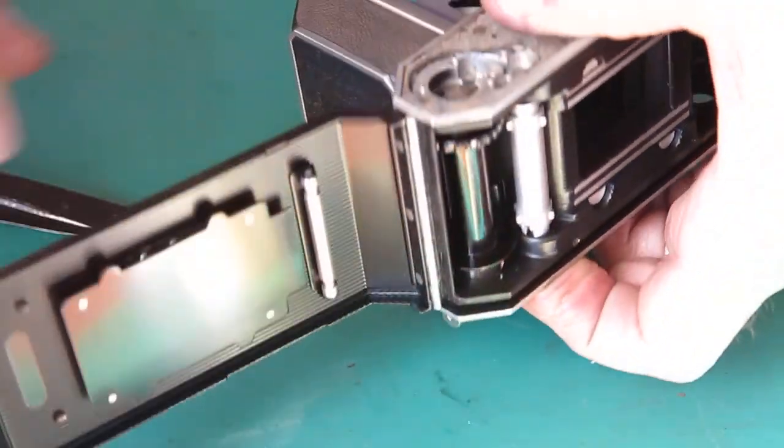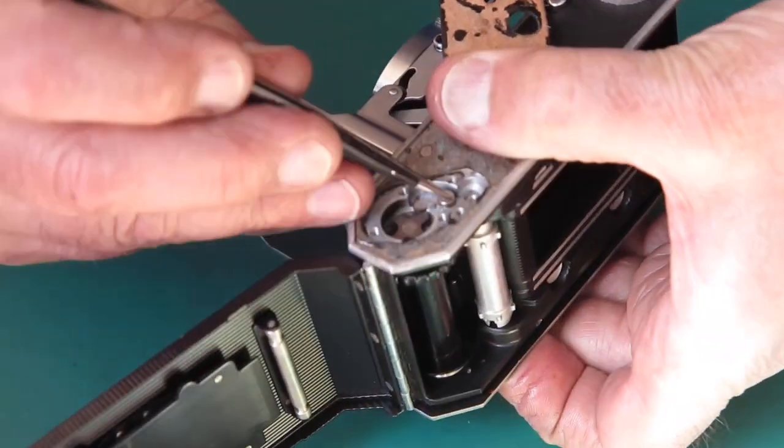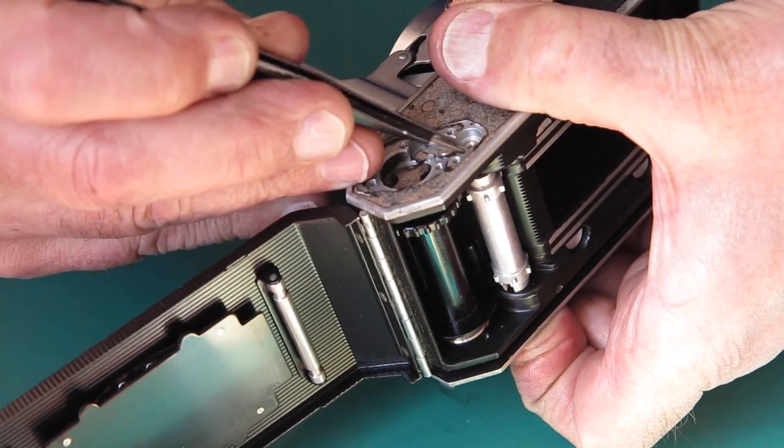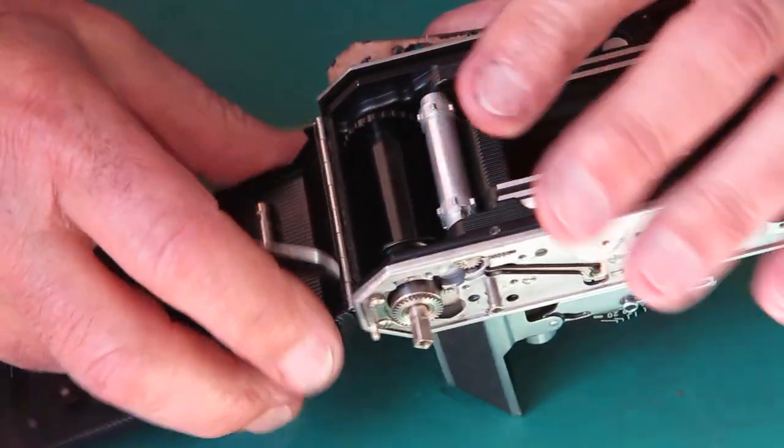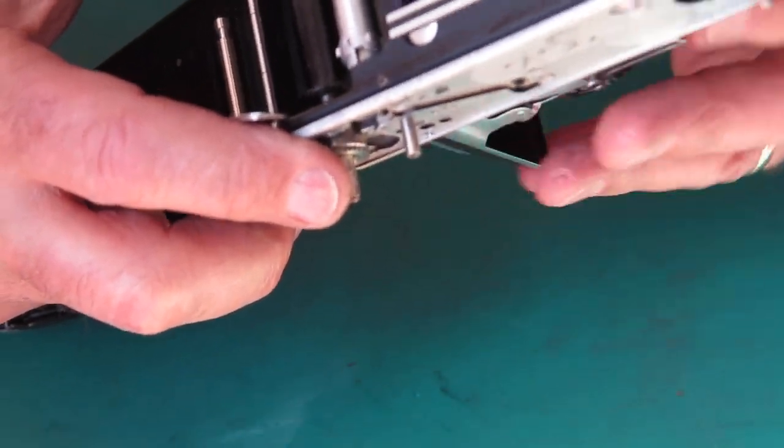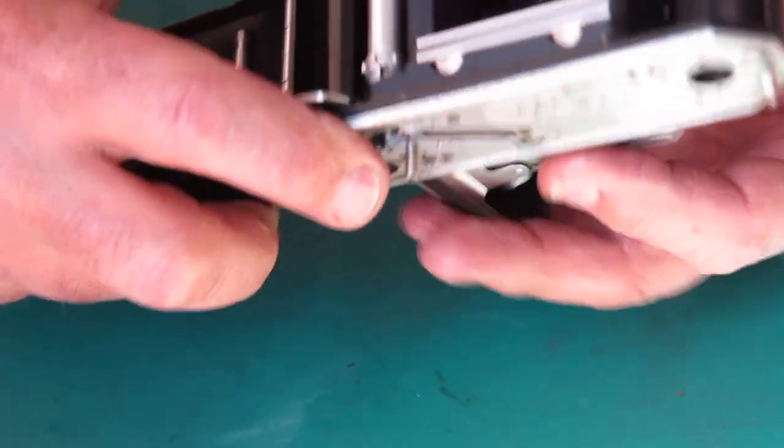I flip the camera over. You can pull back this lever, allows that shaft to come right through there. I'll just close the front of this camera. It'll lie flat.